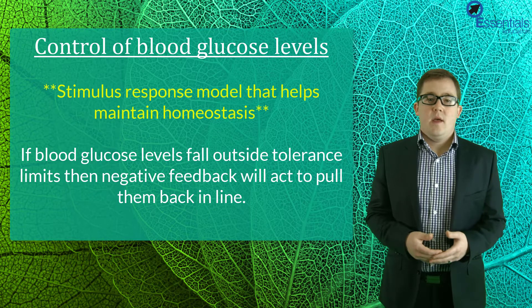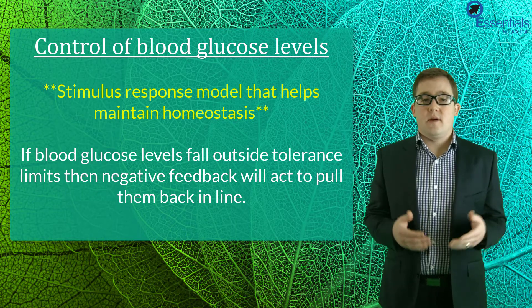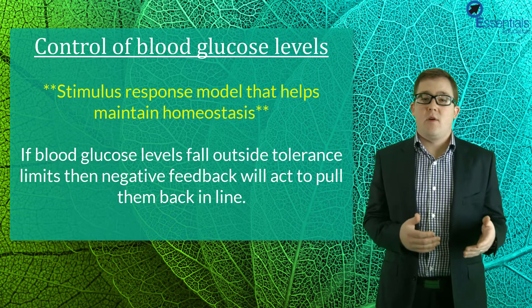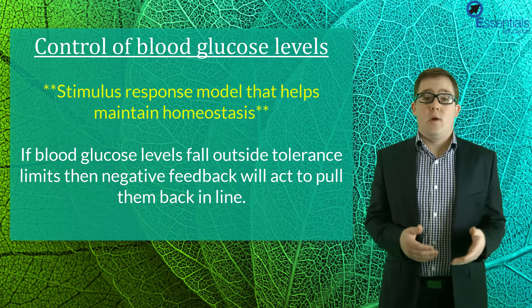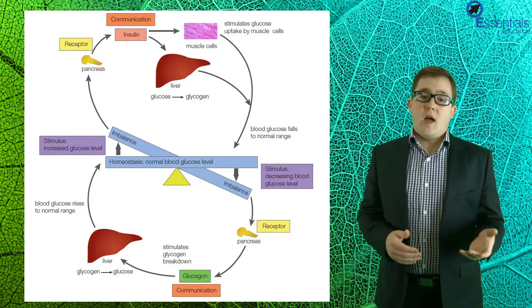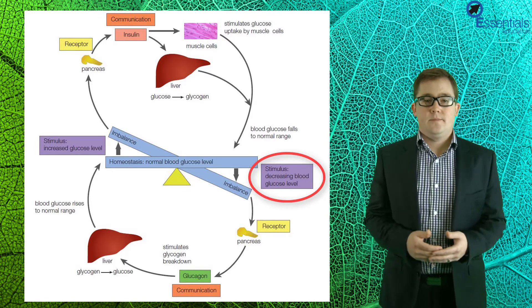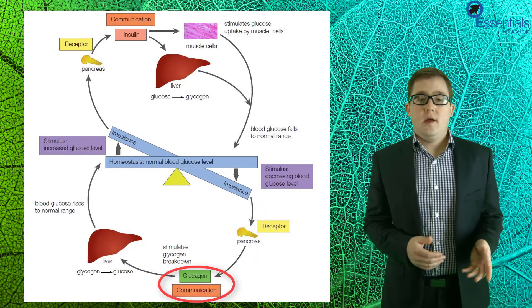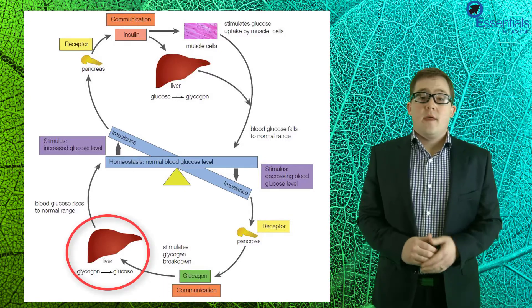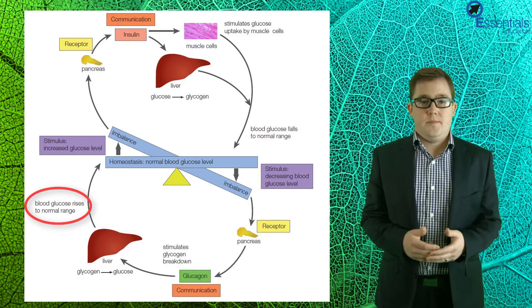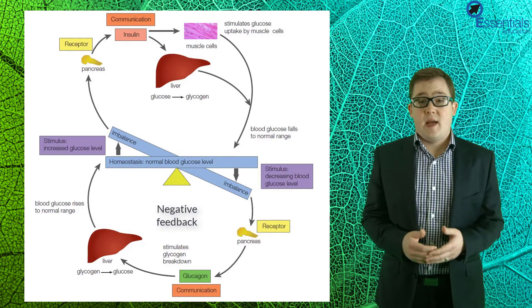Let's look at how hormones maintain blood glucose levels. Similar to what was discussed in the nervous system video, these hormonal actions are examples of stimulus-response models that help maintain homeostasis. It's important to keep blood sugar levels around 75 to 95 milligrams per deciliter, and if they fall outside these ranges, negative feedback will occur to pull levels back into line. When a decrease in blood glucose levels occurs, these low levels are first detected by chemoreceptors in the pancreas. The pancreas is then stimulated to secrete glucagon, which travels through the blood to the liver, stimulating it to break down glycogen to glucose, which is then secreted into the blood to increase blood glucose levels.